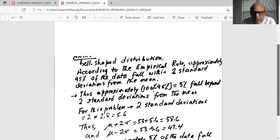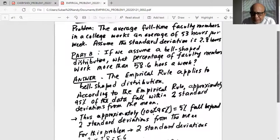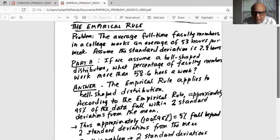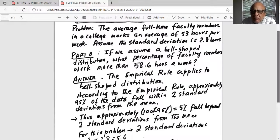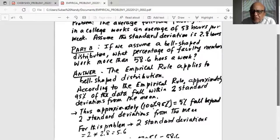Empirical rule applies only to bell-shaped distribution. Same problem. Only in part B, we are assuming a bell-shaped distribution. And what percentage of faculty members work more than 58.6 hours? The empirical rule applies to bell-shaped distribution.